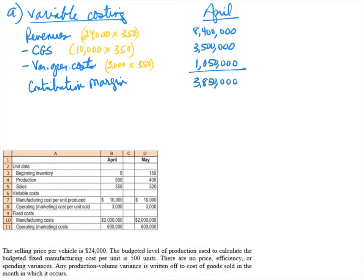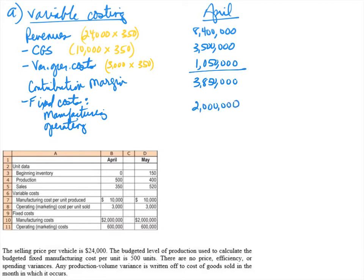Just like a normal contribution margin income statement, we subtract all fixed costs from contribution margin. We have manufacturing fixed costs of $2,000,000 and operating fixed costs of $600,000. That leaves us with an operating income under variable costing of $1,250,000.